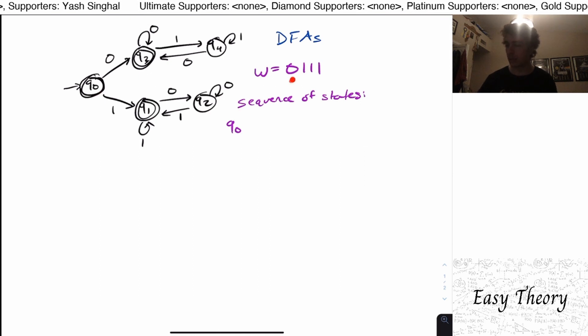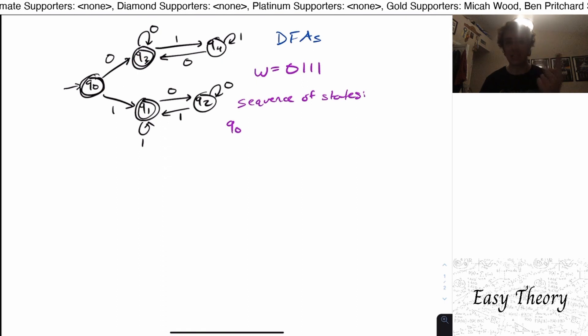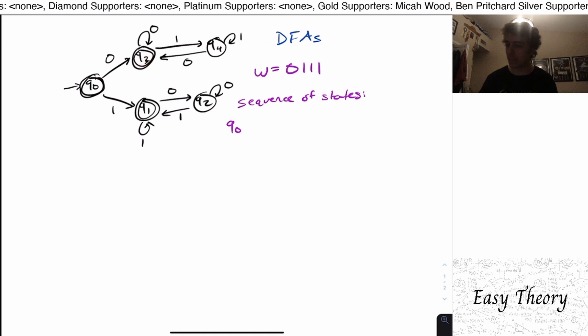Then we see, oh, well, the first character is a zero. That means from q0, which is where we are right now, we follow the transition labeled zero. There can only be exactly one of them. So we don't have any choice to make. So we end up at q3.